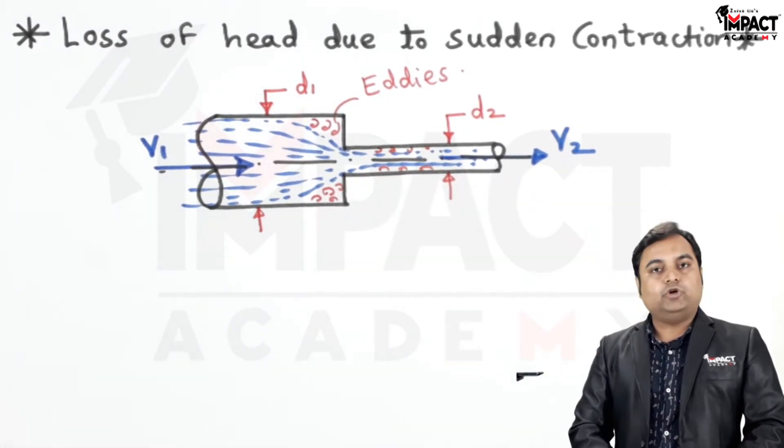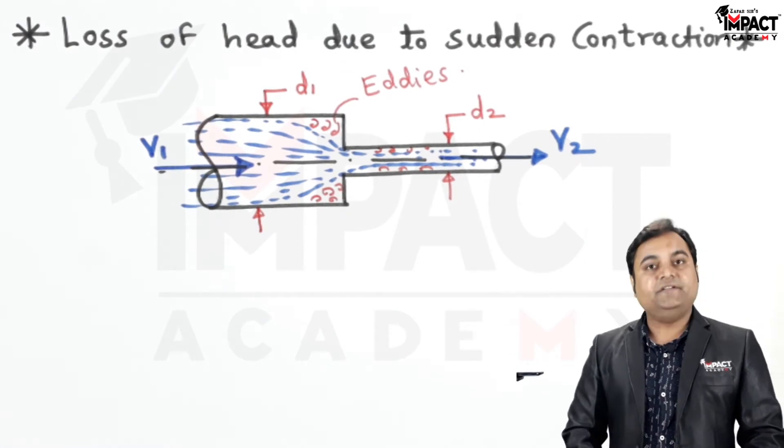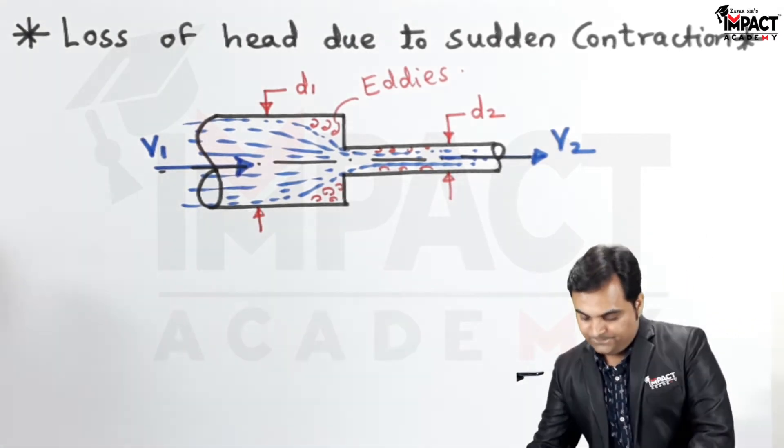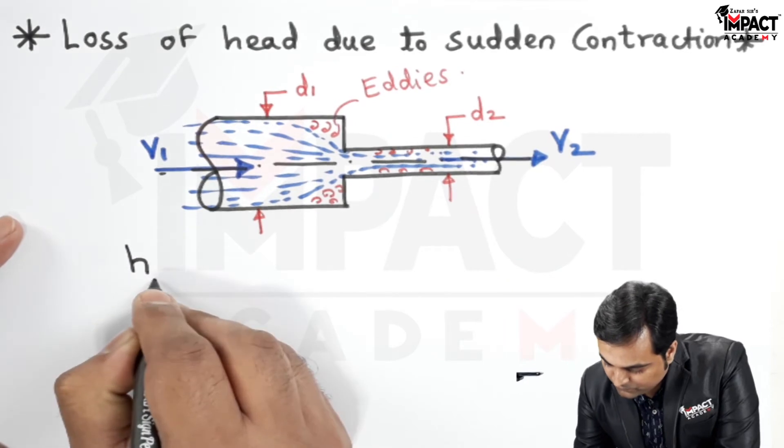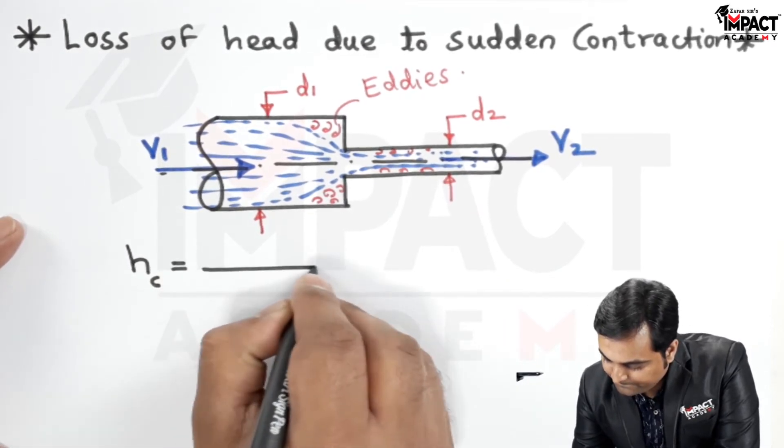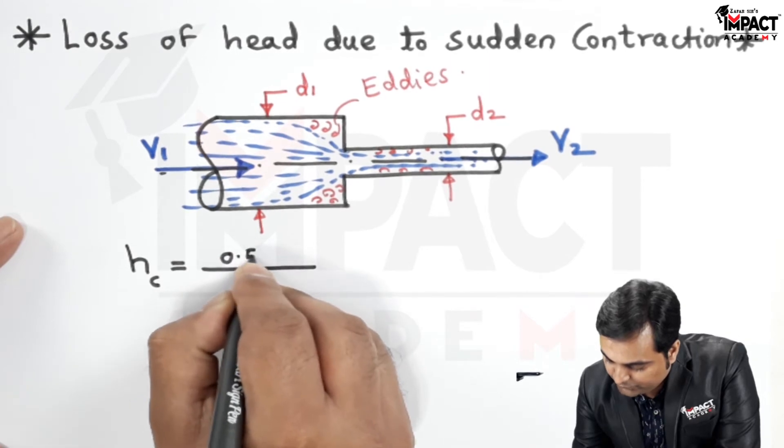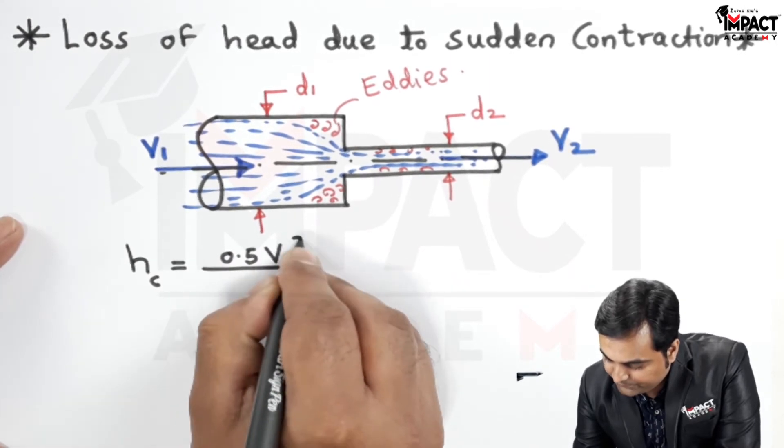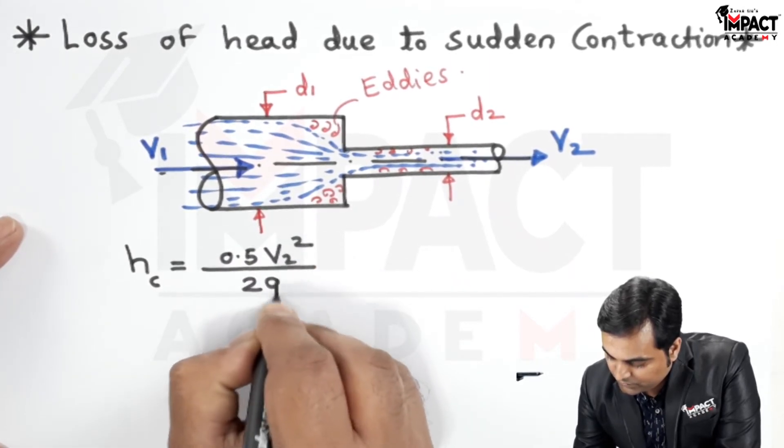So there will be the minor loss which is due to sudden contraction and it is given by the formula: hc = 0.5 V2 square upon 2G.